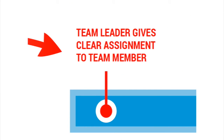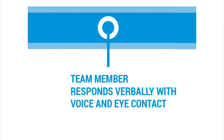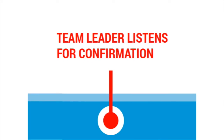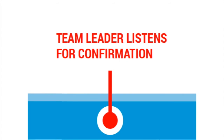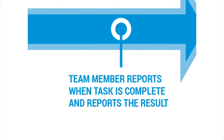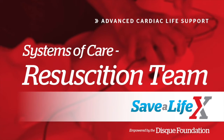First, the team leader gives a clear assignment to the members. Then the team member responds verbally with voice and eye contact. The leader listens for confirmation, and the member reports when the task is complete and its results. That concludes the resuscitation team lesson.